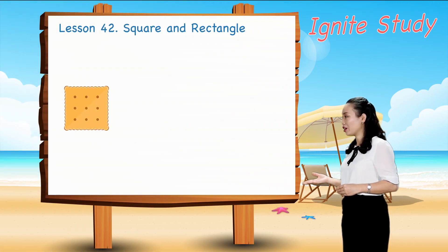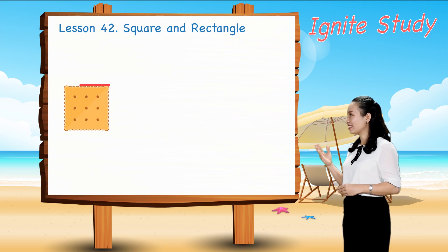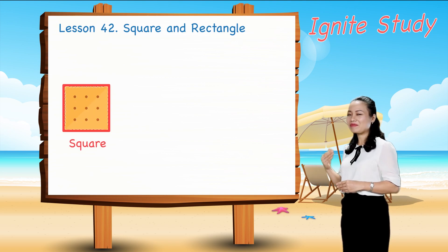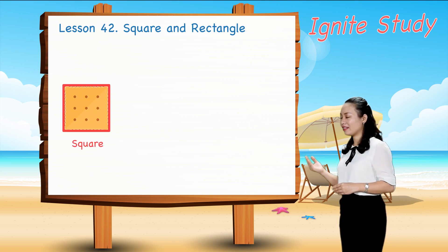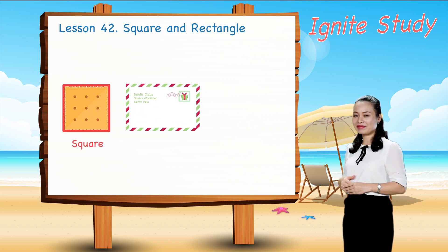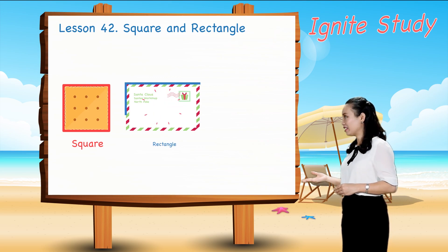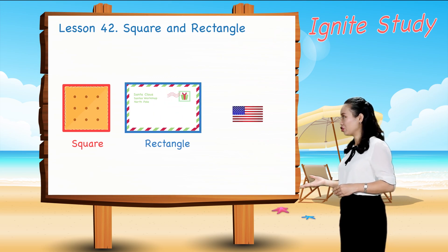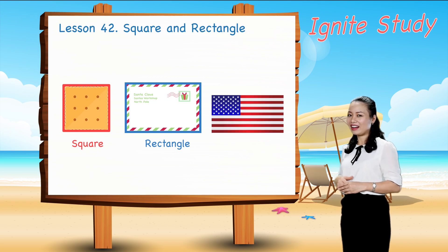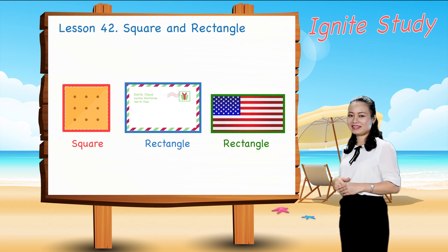What shape is this biscuit? It's a square. What shape is this envelope? It's a rectangle. What shape is this flag? It's a rectangle.